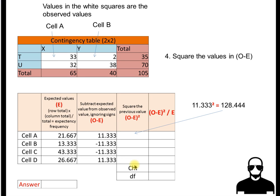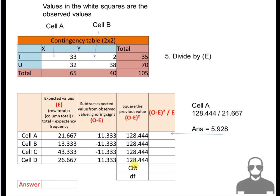Let's check your answers. I make it 128.444 across the board. We now take this value and divide it by the original expectancy value that we calculated. You take 128.444 divided by 21.667. The answer I get for this column is 5.928. If you got that, fill in the rest. Pause it and we'll check your answers.